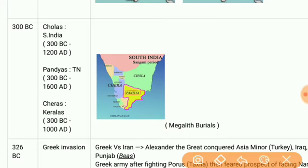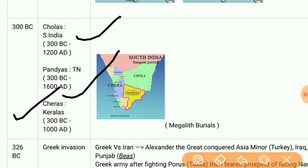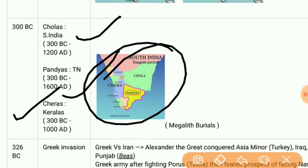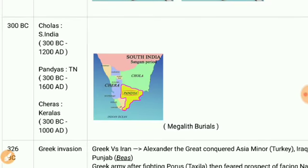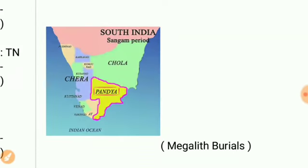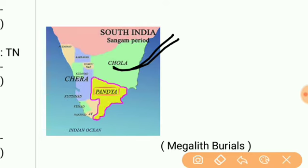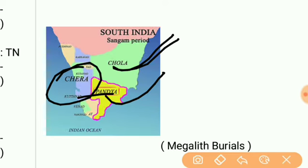Now we have the southern kingdoms. The Cholas ruled from 300 BC to 1200 AD, the Pandyas from 300 BC to 1600 AD, and the Cheras from 300 to 1000 AD. All three powers were in southern India. The Chola Empire is above the Pandya Empire, and the Chera Empire is to the west of the Pandya region.